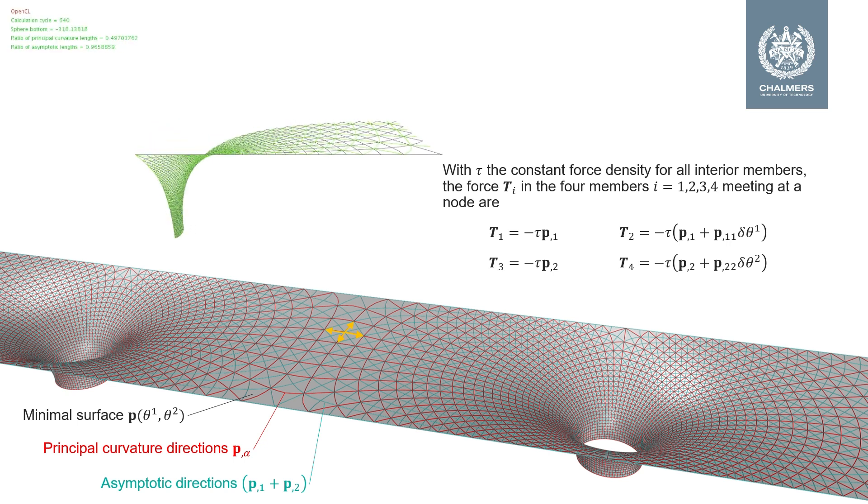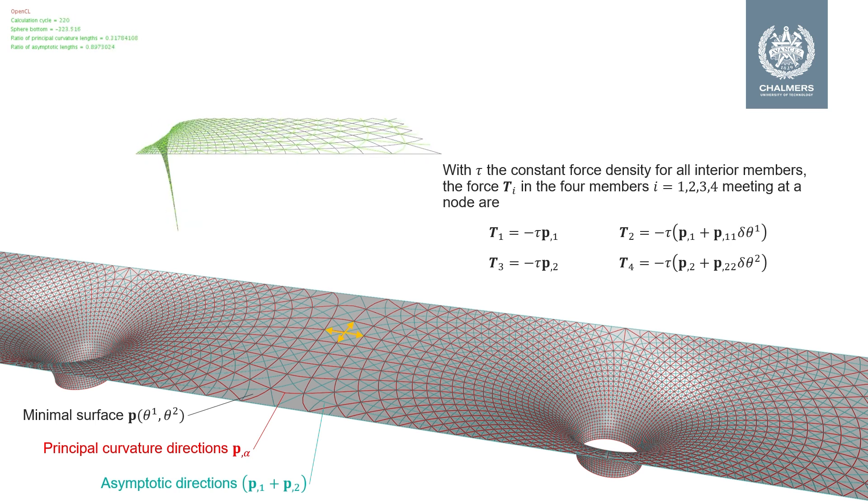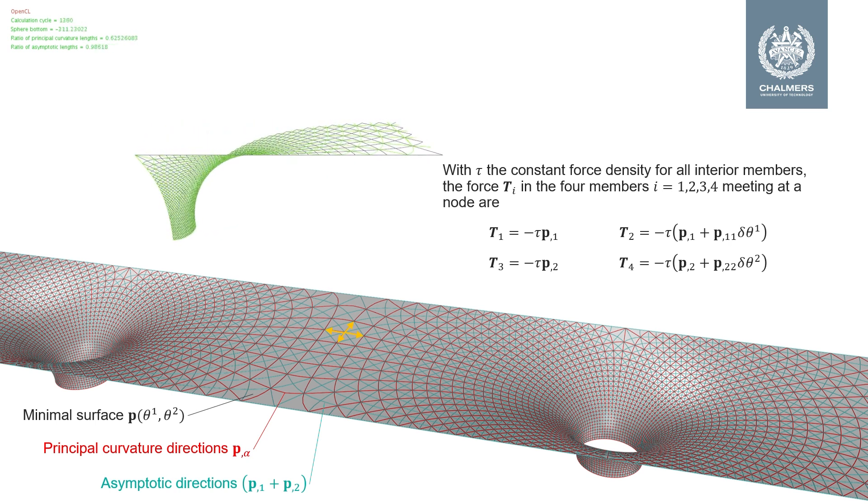This movie shows the form-finding procedure for a portion of the surface connected to the rest of the surface via symmetry. The tension coefficient can be set arbitrarily, so as a convergent criterion we may study the ratio between the sum of the element lengths in one direction and the sum of the element lengths in the other. We do this for both the principal curvature directions and the asymptotic directions.